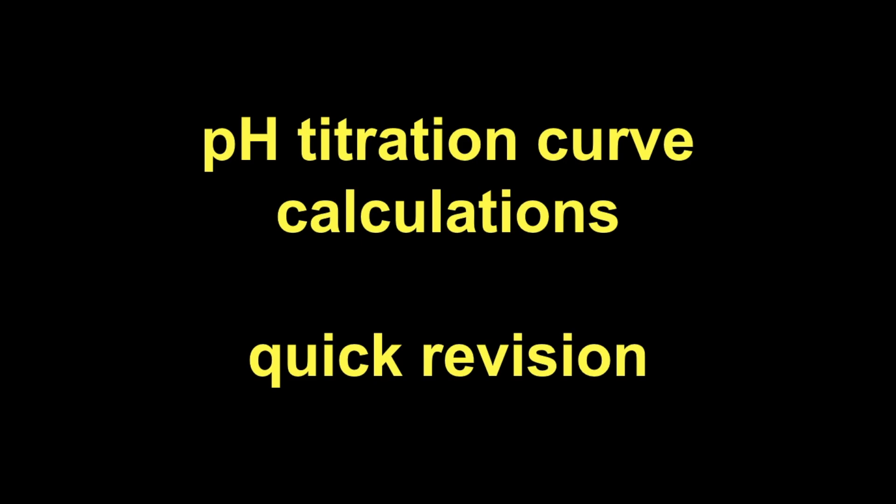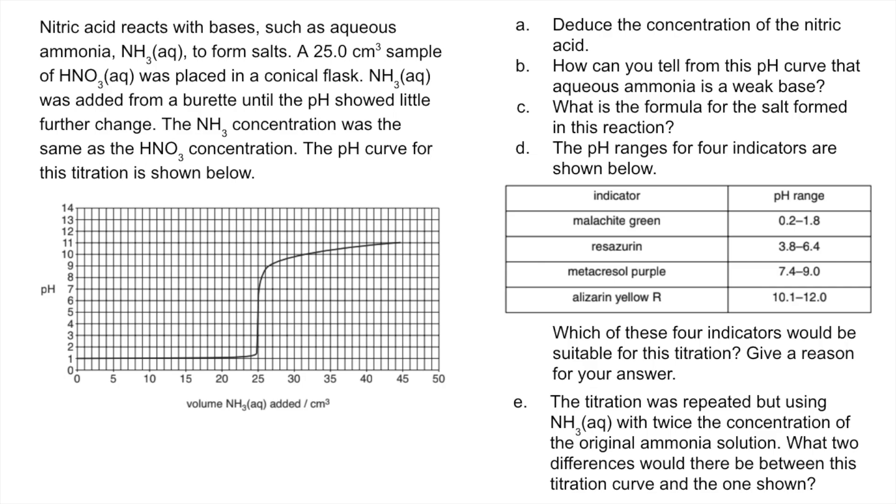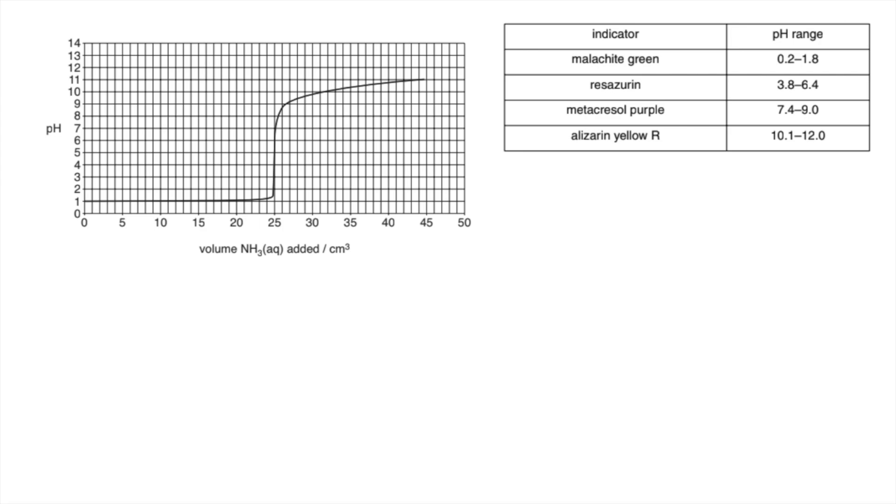Here's the first one. Part a, we've got to calculate the concentration of the nitric acid. You can see from the titration curve at the start it starts at pH 1.